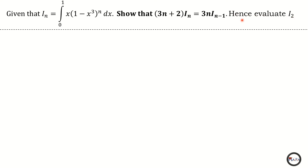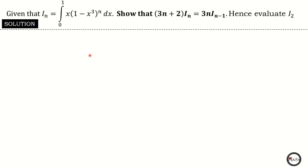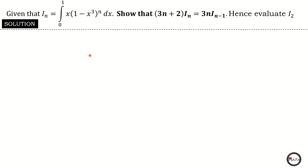In problems like this we use the integration by parts principle to prove the relationship between I of n and I of n minus one. To begin the integration by parts process you need to know what you are going to let to be u and what you are going to let to be dv, because you need your u, your v, and your dv.